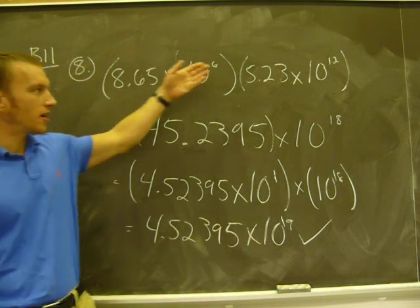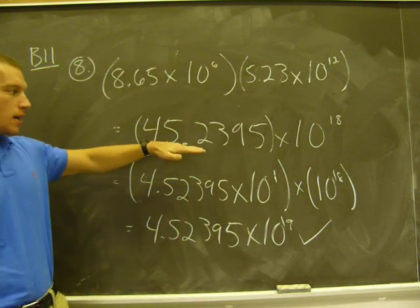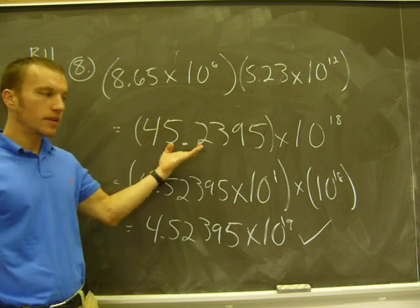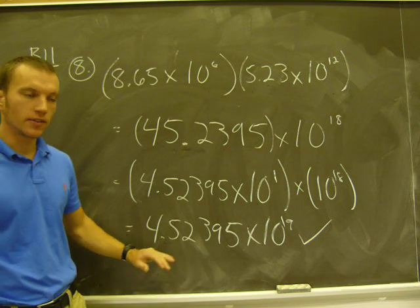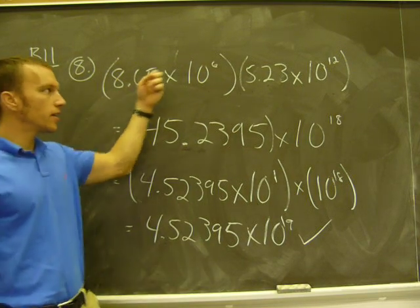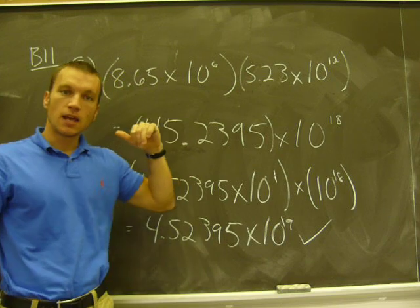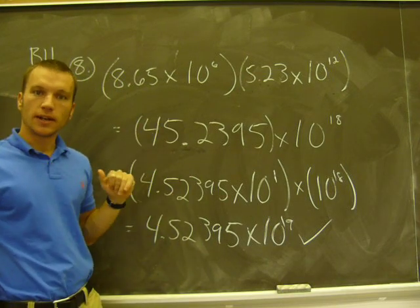Sometimes with these problems, you multiply and your number won't be in scientific notation. This number will either be greater than 10 or less than 1. And there's another step you have to do in order to put it in scientific notation. Other times, if you get lucky, that times that will be less than 10 and greater than 1, and you'll be done there.